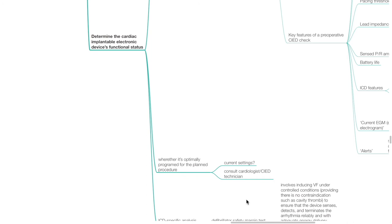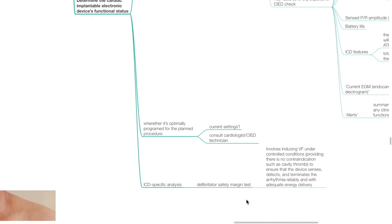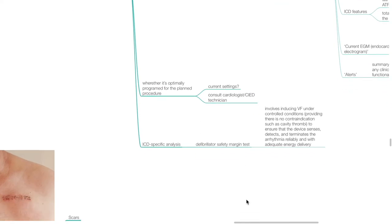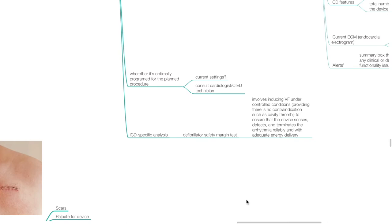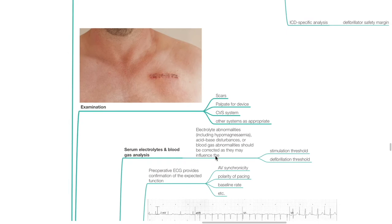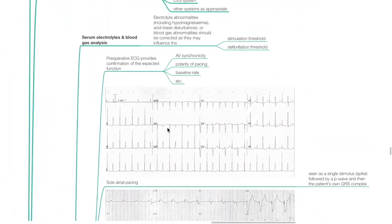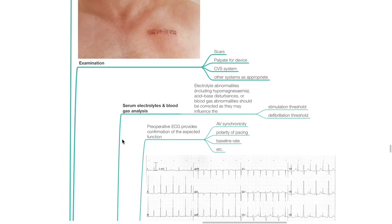Determine whether the device is optimally programmed for the planned procedure. Consult the cardiologist and CIED technician. ICD-specific analysis: the defibrillator safety margin test involves inducing VF under controlled conditions — providing there is no contraindication such as cavity thrombi — to ensure the device detects and terminates the arrhythmia reliably with adequate energy delivery. Serum electrolytes and blood gas analysis should be obtained. Electrolyte abnormalities including hypomagnesemia and acid-base disturbances should be corrected, as they may influence the stimulation threshold and defibrillation threshold.